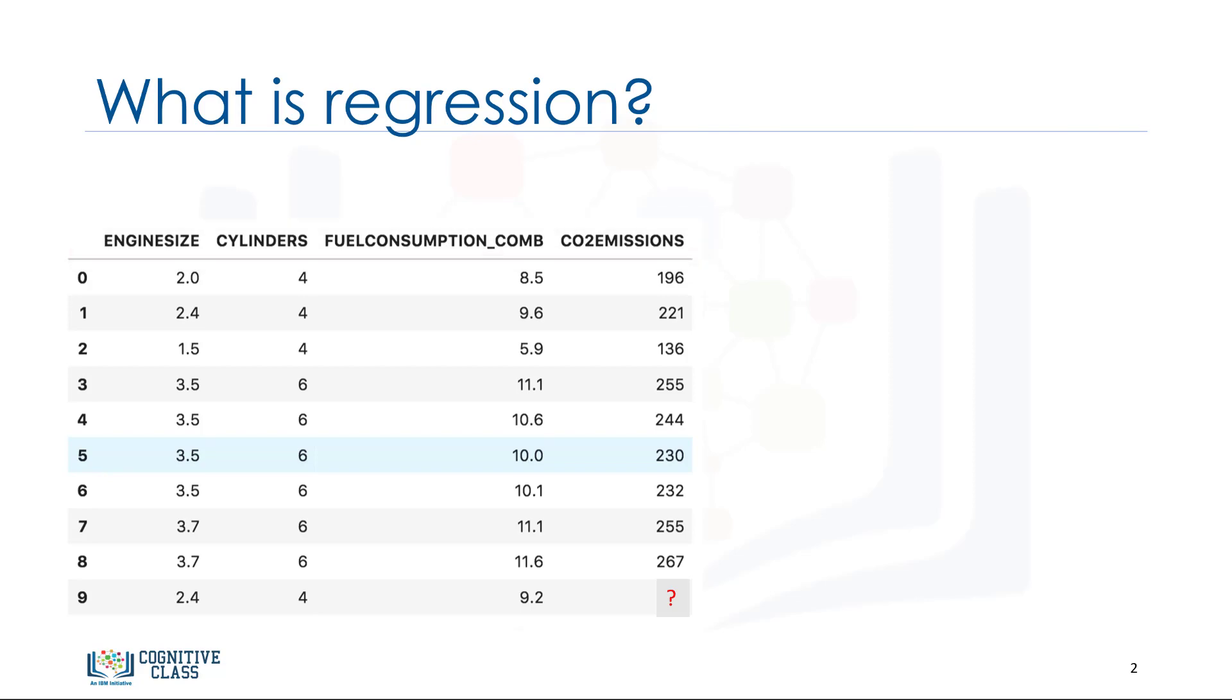The question is, given this data set, can we predict the CO2 emission of a car using other fields, such as engine size or cylinders?